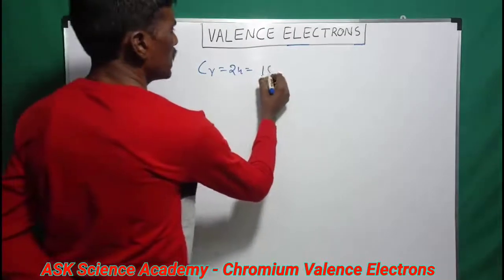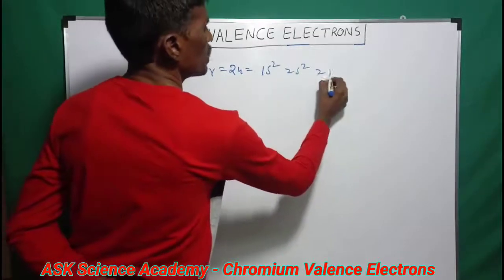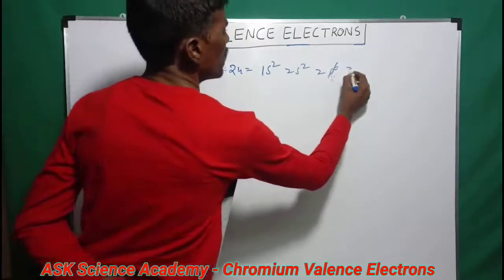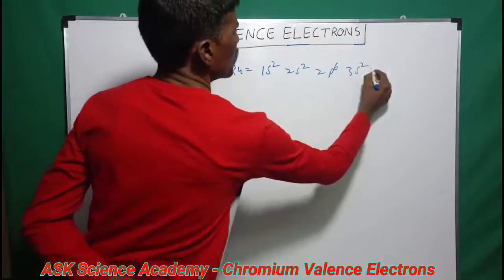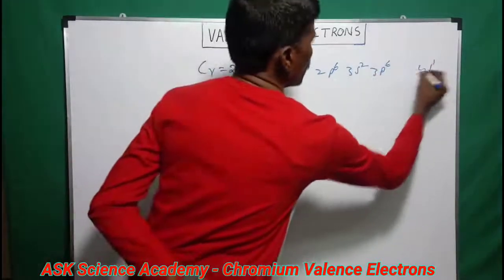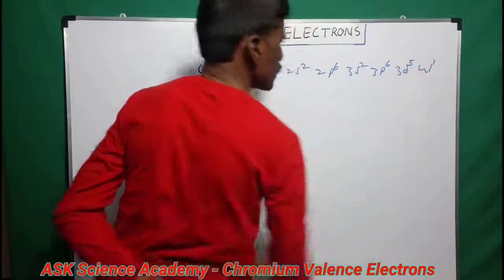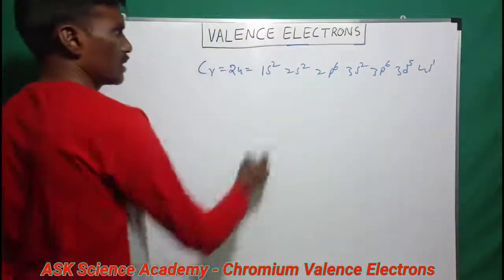The electron configuration of chromium is 1s², 2s², 2p⁶, 3s², 3p⁶, 4s¹ and 3d⁵. This is the configuration.